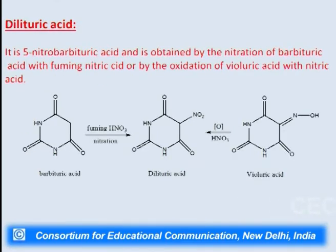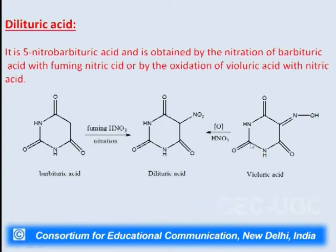Then comes dilituric acid, which is also a barbituric derivative — it is 5-nitrobarbituric acid. Since it is 5-nitro, nitration is done on barbituric acid in the presence of nitrating mixture with fuming nitric acid. Also by oxidation of violuric acid we can prepare dilituric acid. So from barbituric acid itself and from its derivative violuric acid, both routes can yield dilituric acid which is 5-nitrobarbituric acid.